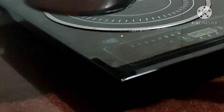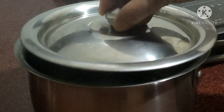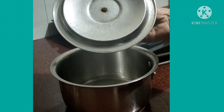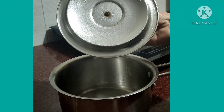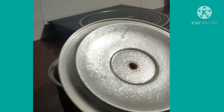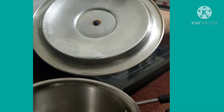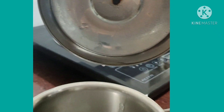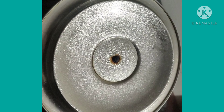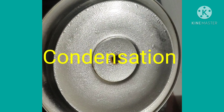Now we will remove the pan from the fire and cover it with a lid. After a few minutes, we will lift the lid carefully. Look at the inner side of the lid — we will find droplets of water. Water vapour, when it comes in contact with the cool surface of the lid, condenses back to water. This process is called condensation.